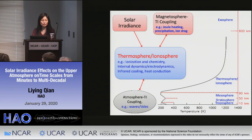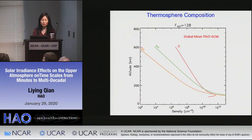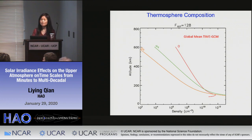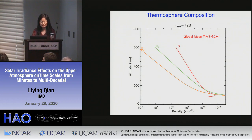To look at the solar irradiance effect, let's look at the thermosphere first. Here it shows the thermosphere major species — atomic oxygen, molecular nitrogen, and molecular oxygen — with altitude on the y-axis versus density on the x-axis. One characteristic that distinguishes the thermosphere from the atmosphere below is that the atmosphere below is well mixed, but in the thermosphere the species are separated because of molecular diffusion, and turbulence essentially ceases to exist in the thermosphere.